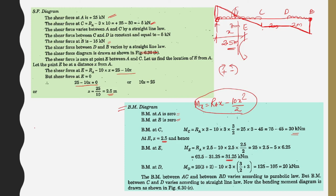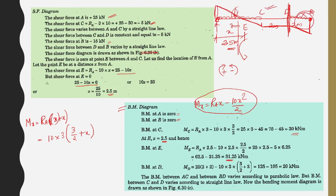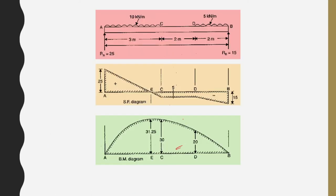Setting shear force to zero: RA minus 10 into x equals 25 minus 10x equals zero, giving x equals 2.5 meters from A — this is point E. Bending moment at A equals zero, at B equals zero. Moment at C: RA into 3 minus 10 into 3 into 3/2 equals 75 minus 45 equals 30kN-m. At E (x equals 2.5m): RA into 2.5 minus 10 into 2.5²/2 equals 62.5 minus 31.25 equals 31.25kN-m. Moment at D equals 20kN-m.